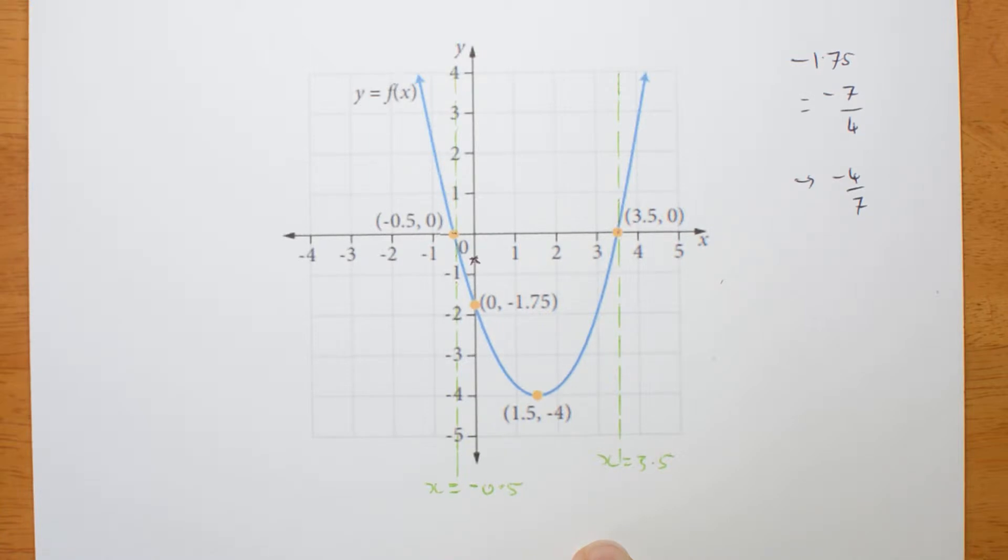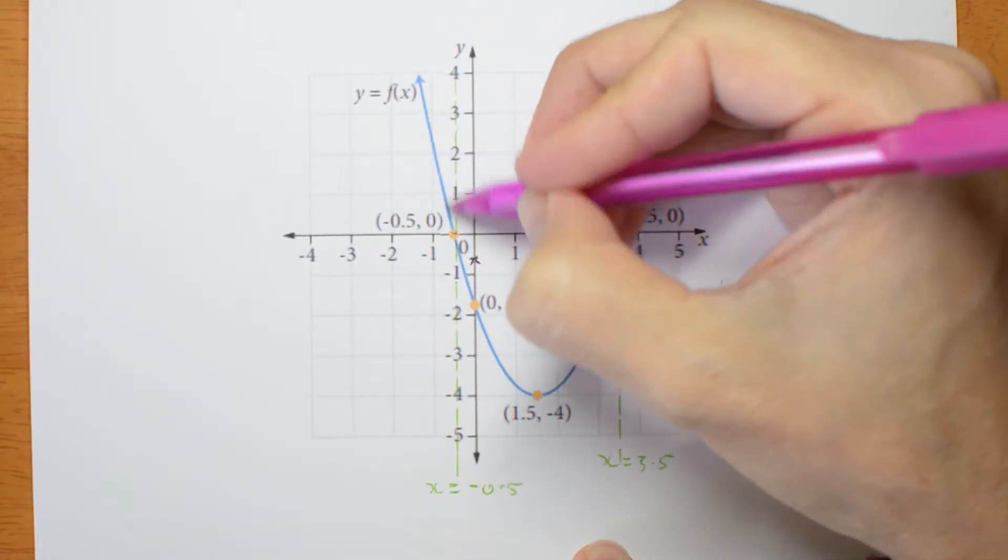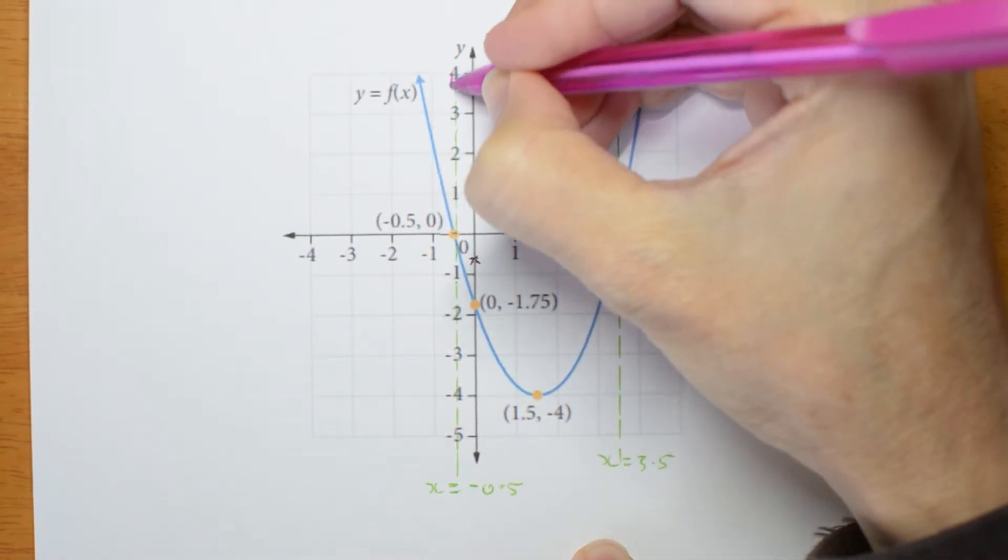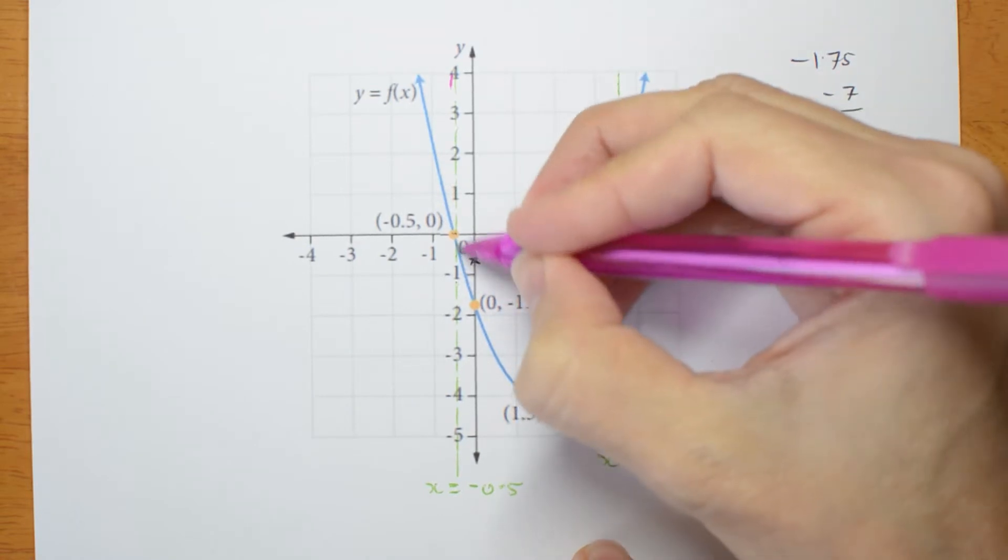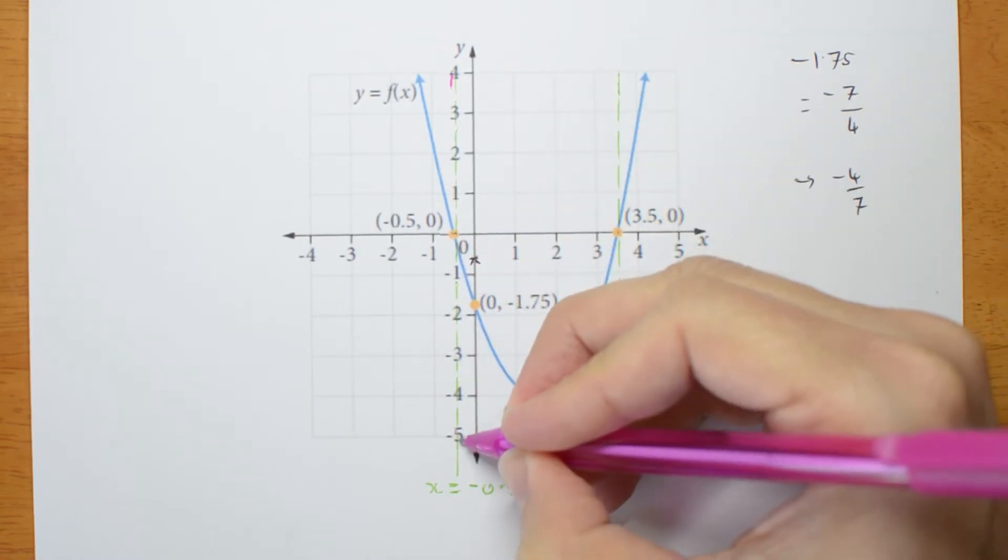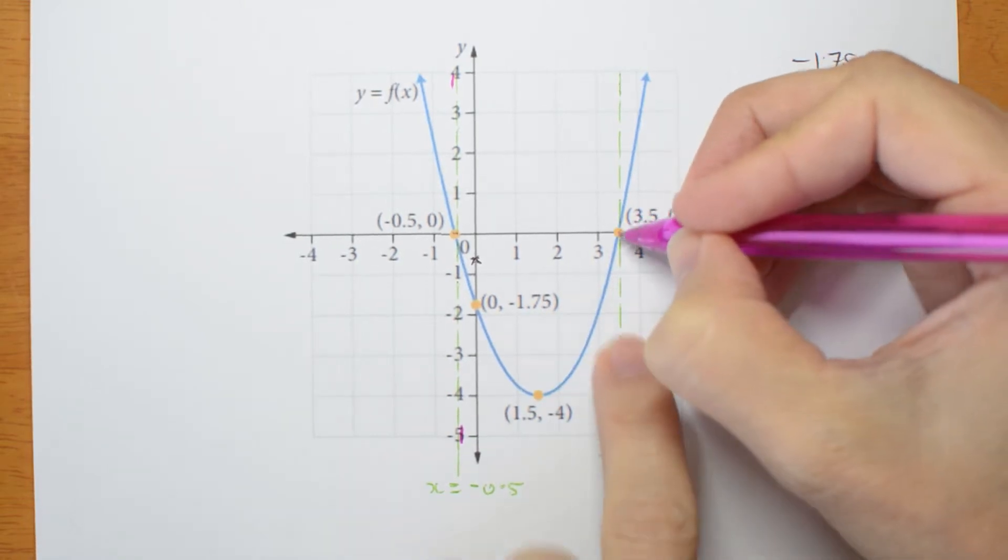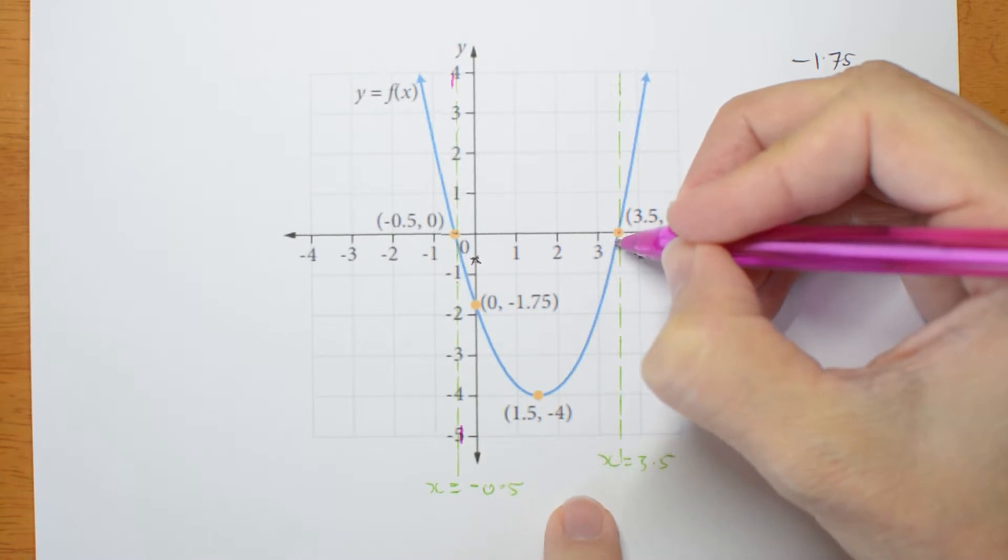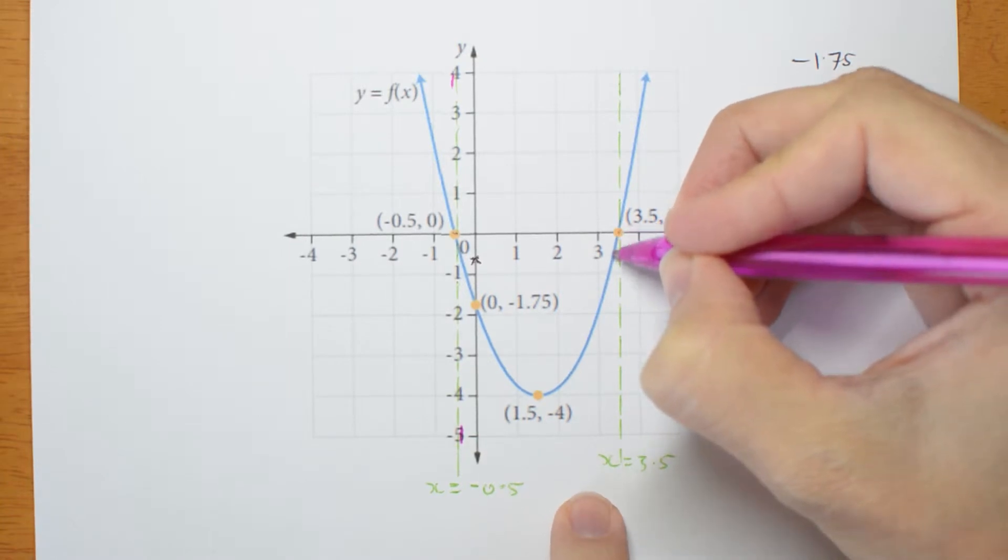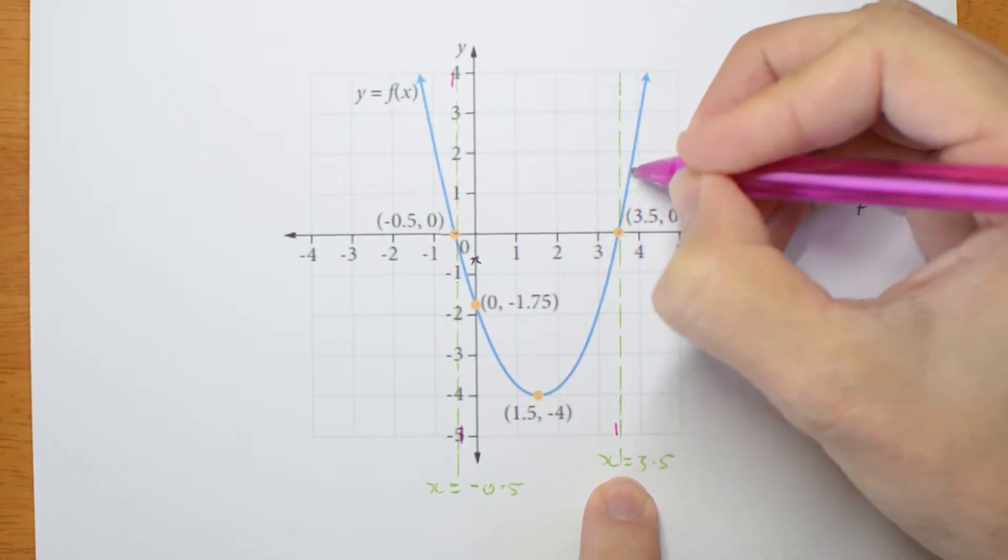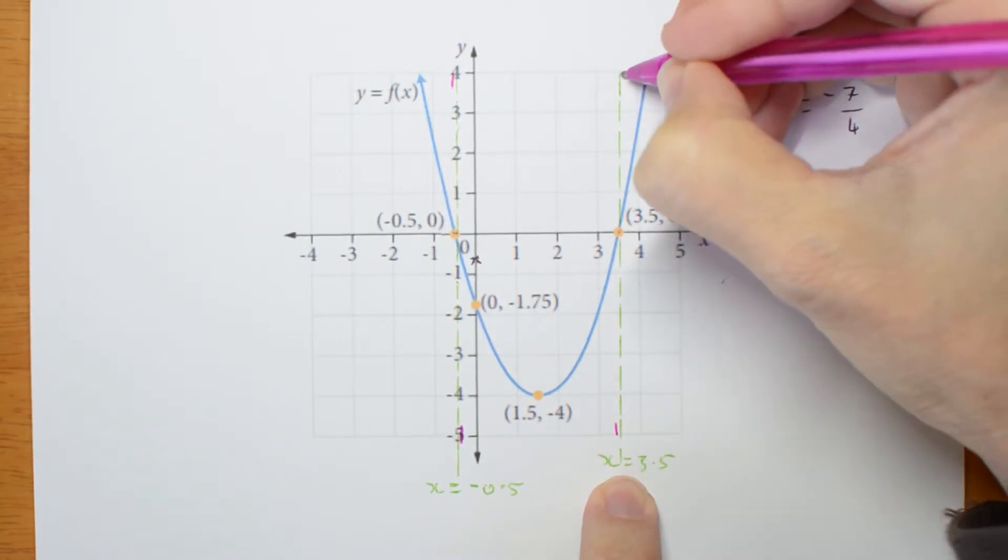Oh, what's the graph doing at those points? So here, the graph is getting very small but positive. So the reciprocal is going to be up here. Here it's getting very small but negative. The reciprocal graph is going to be down here. Here, pardon me, the graph is very small but negative. So the reciprocal is going to be here. And here the graph is very small but positive. So the reciprocal is going to be here.